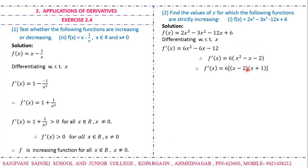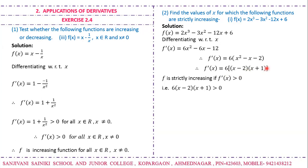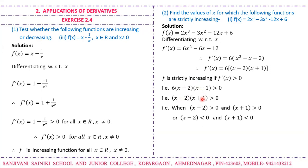For strictly increasing, f'(x) must be greater than zero: 6(x - 2)(x + 1) > 0, so (x - 2)(x + 1) > 0. The product of two numbers is greater than zero when both are positive or both are negative. Case 1: x - 2 > 0 gives x > 2, and x + 1 > 0 gives x > -1. Case 2: x - 2 < 0 gives x < 2, and x + 1 < 0 gives x < -1.